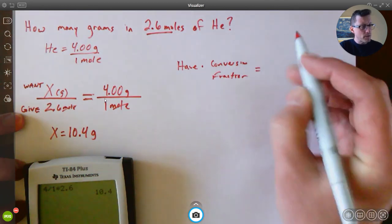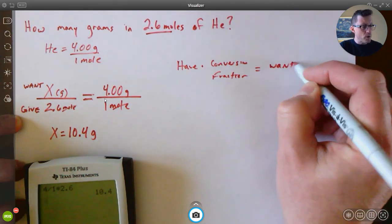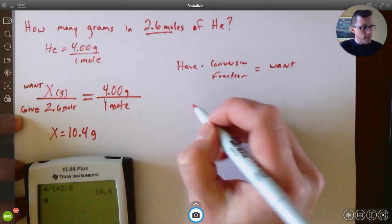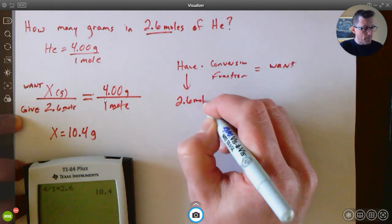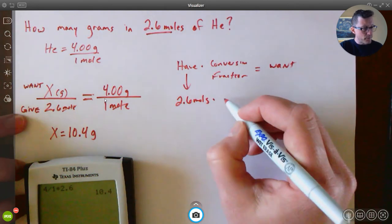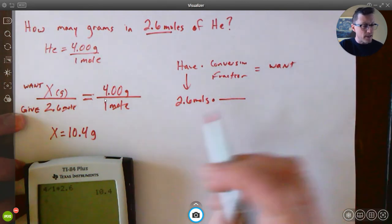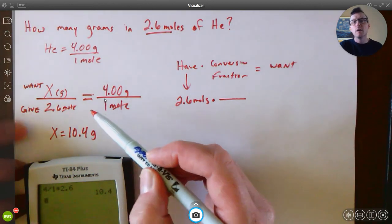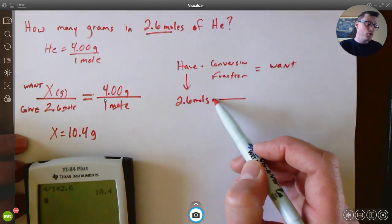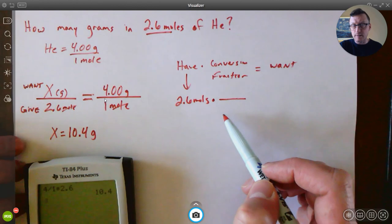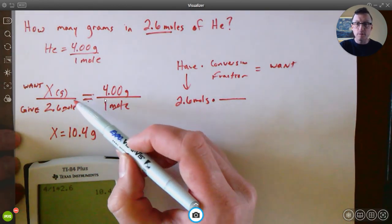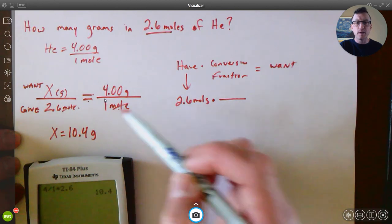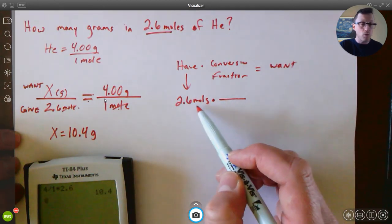When you're done, you end up with the units that you want, right? What do we have? We have 2.6 moles times our conversion fraction. We want on this, now because this is a times instead of an equal sign, the units need to go on opposite sides. Okay, that's a big difference.